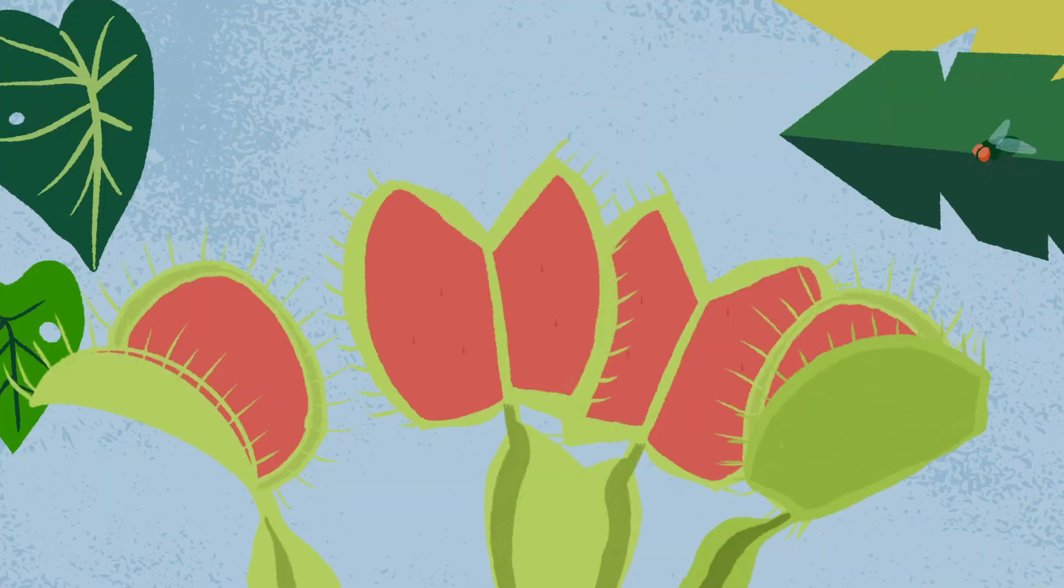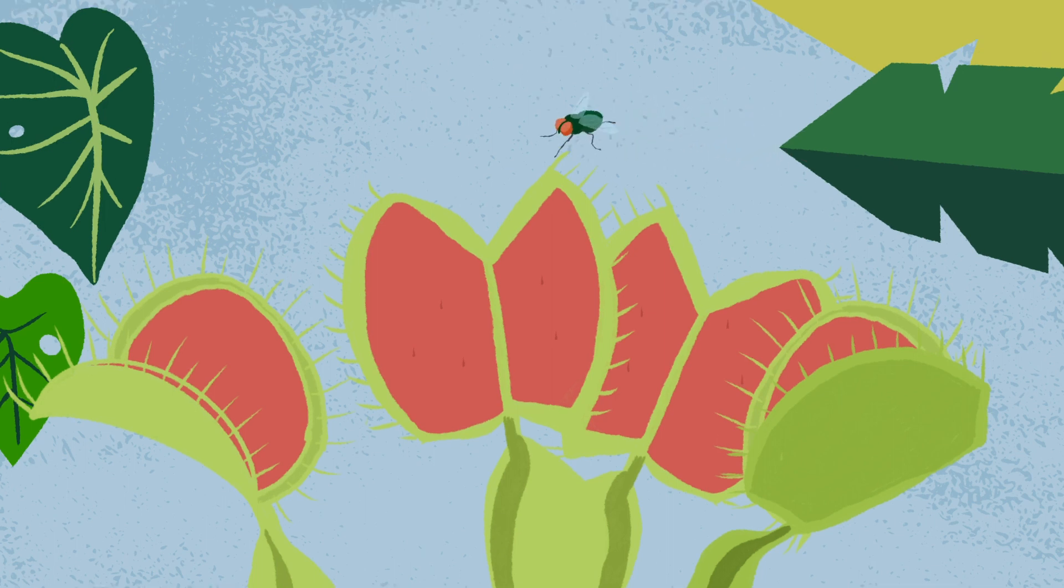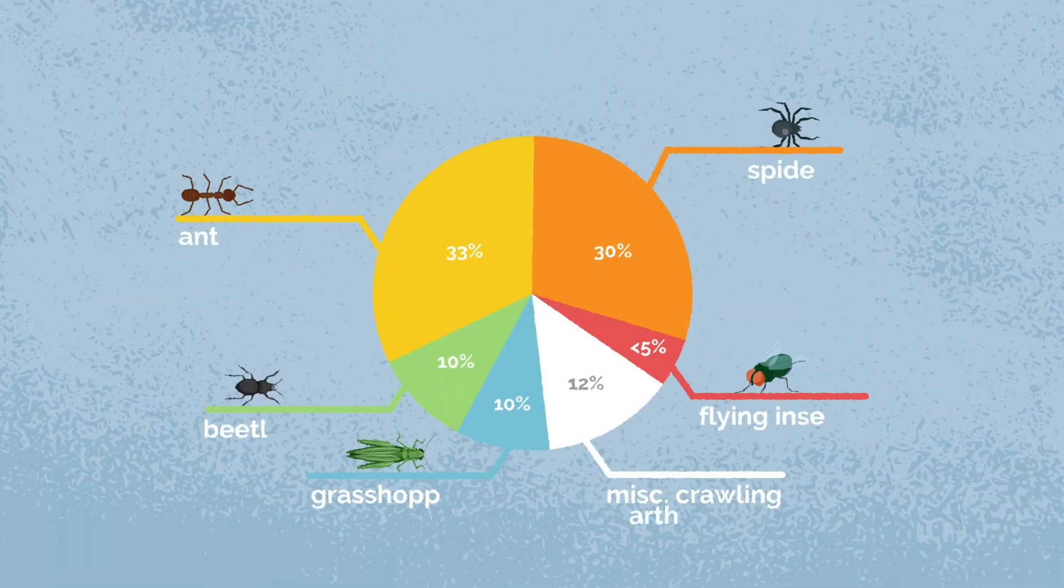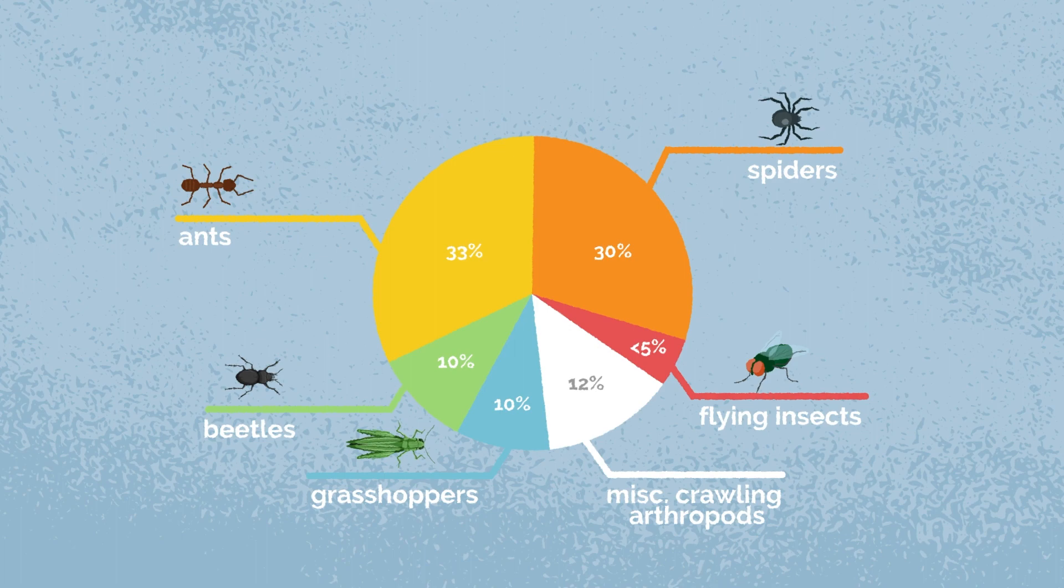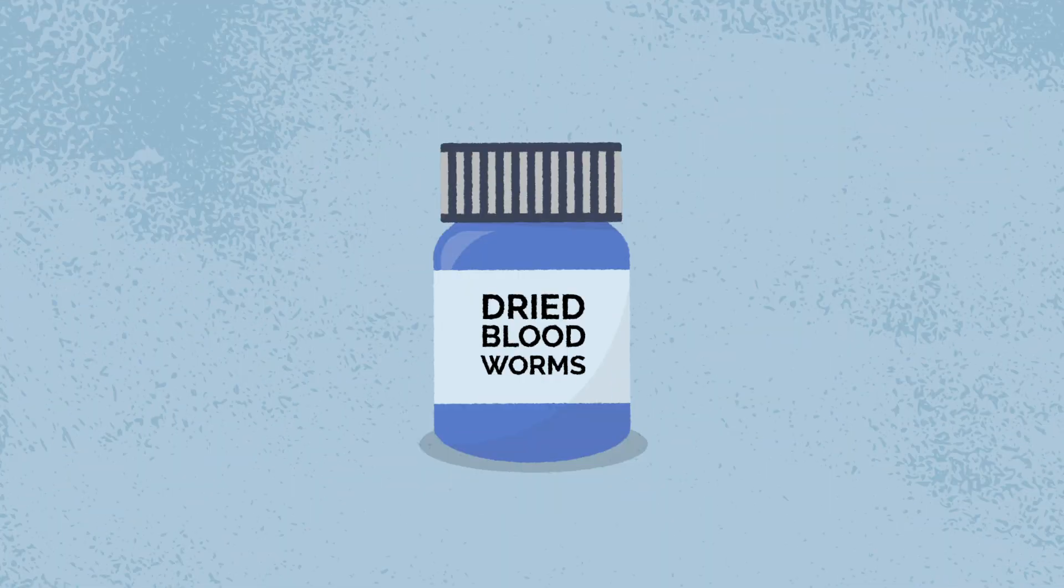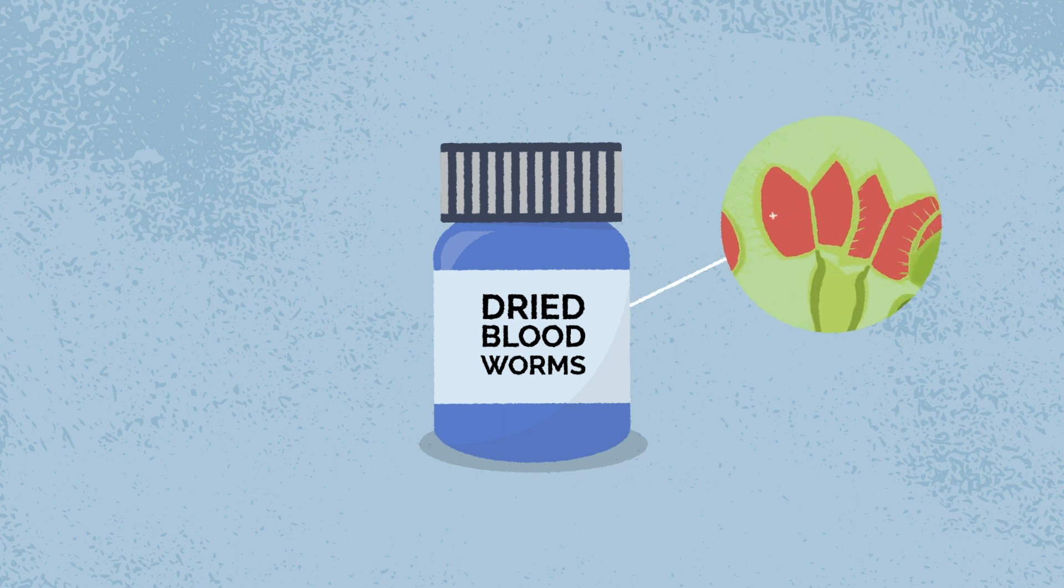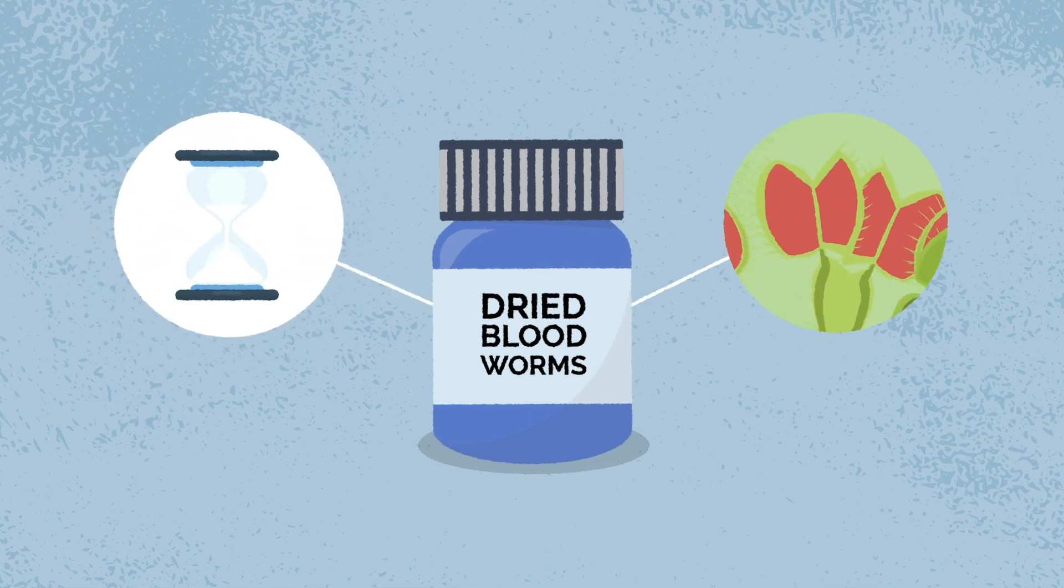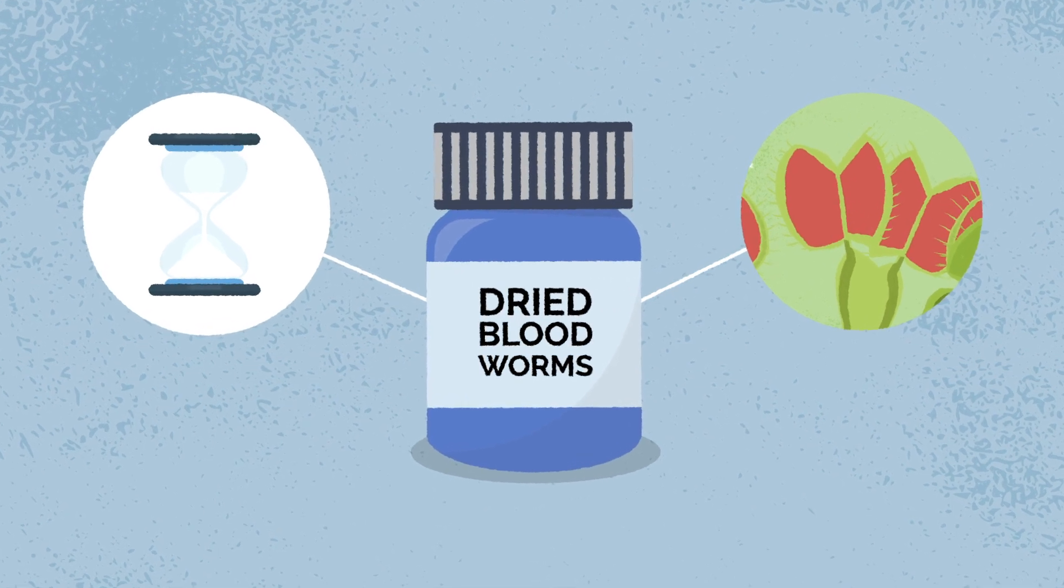In the wild, Venus flytraps don't actually eat a lot of flies. Check out these numbers from a recent study. A small container of dried bloodworms will give your plants an extra boost and the container will last for years. When choosing a container, make sure there are no additives.